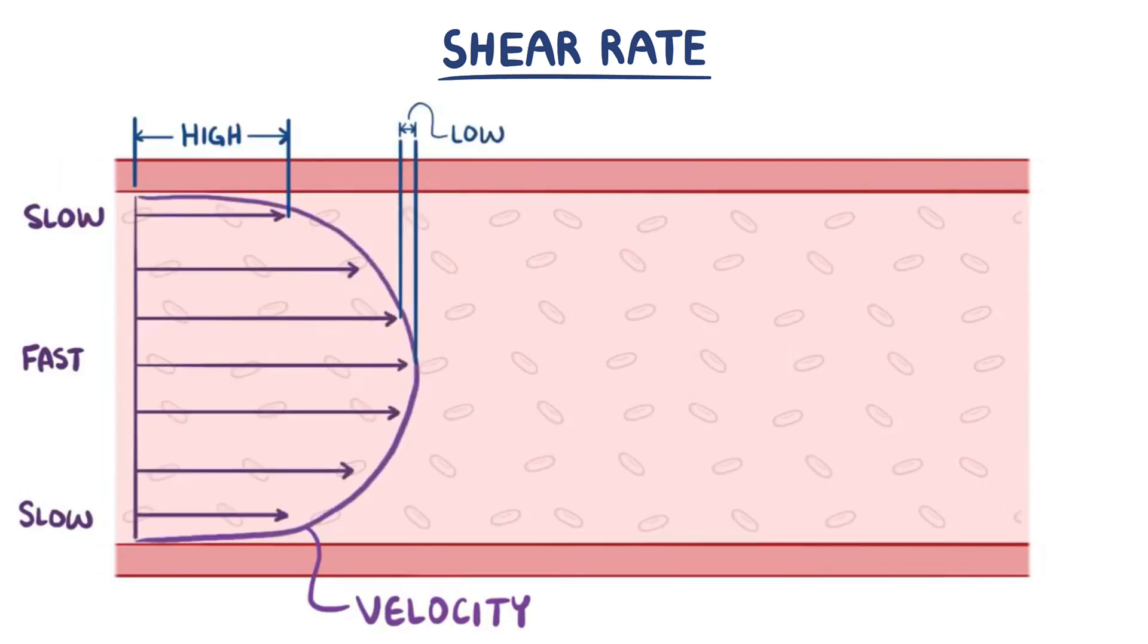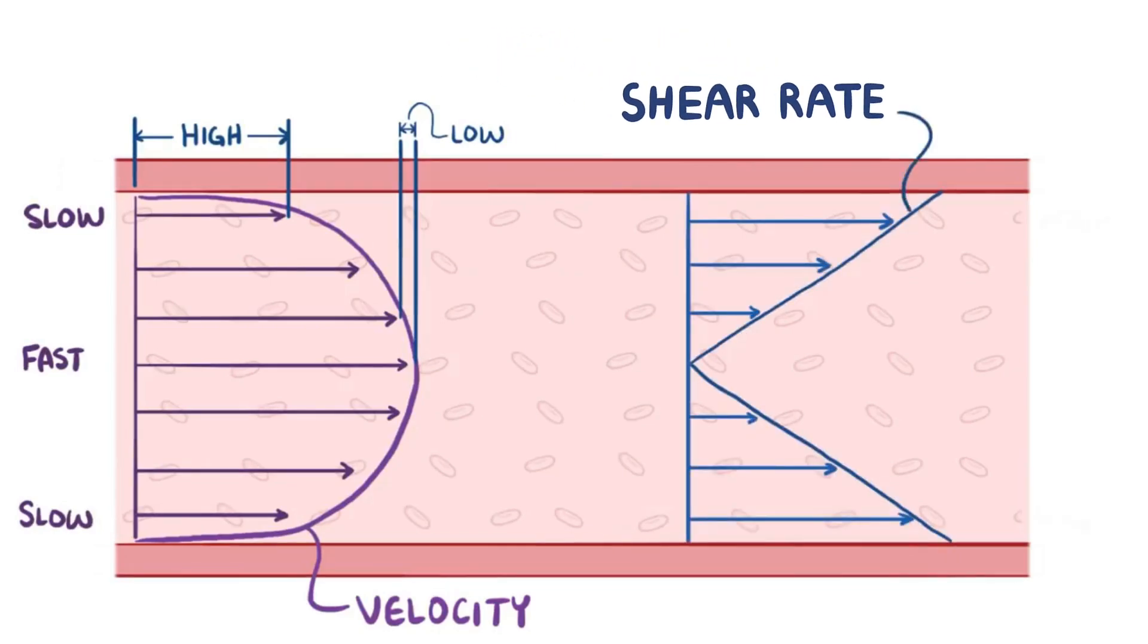This difference in relative velocities is the shear rate. So if we wanted to plot shear rate, near the wall where velocity is changing the most, shear rate is actually the highest. And in the middle, shear rate is very low, and actually drops to zero.